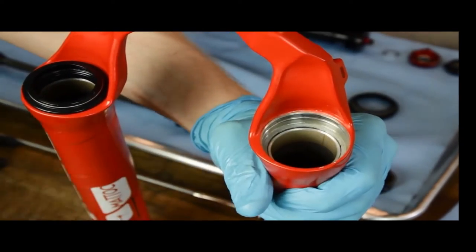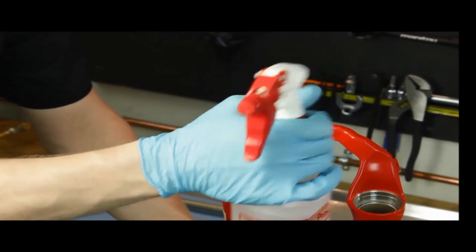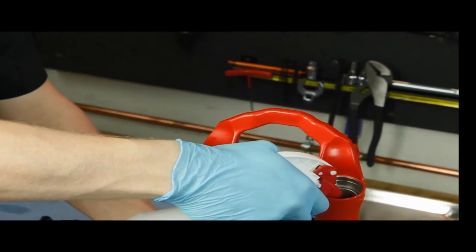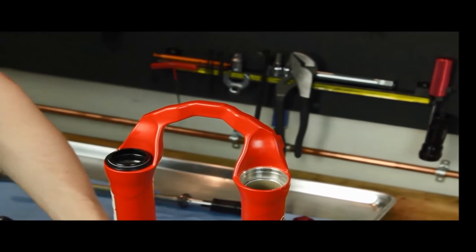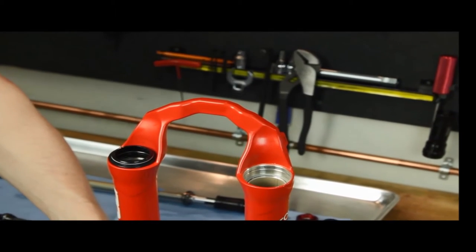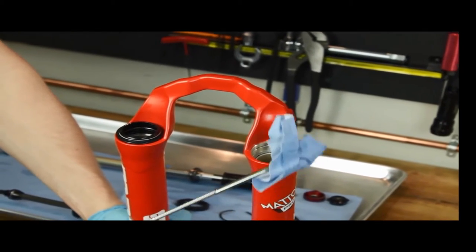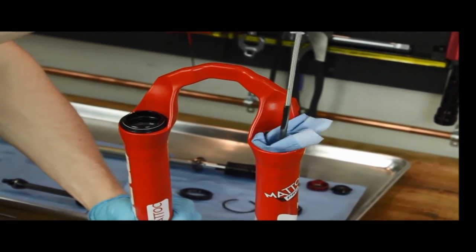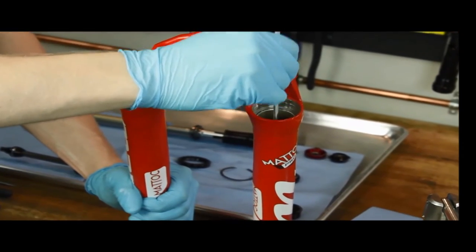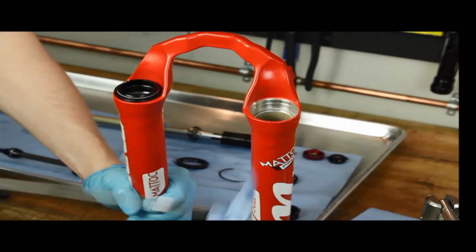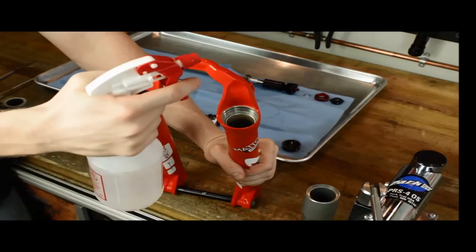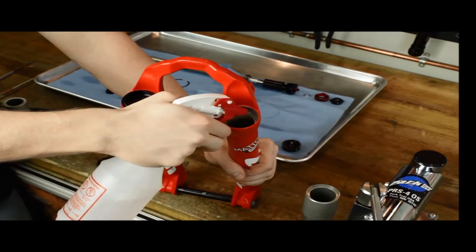If your fork oil was heavy in dirt and grime, you're going to want to clean out your casting before replacing the oil and dust seals. Use a mechanical grabber and lint-free towel to swab out the outer casting. Use large amounts of isopropyl to wash out any dirt and grime. Be sure to air dry before reinstalling the outer casting onto the inner legs.